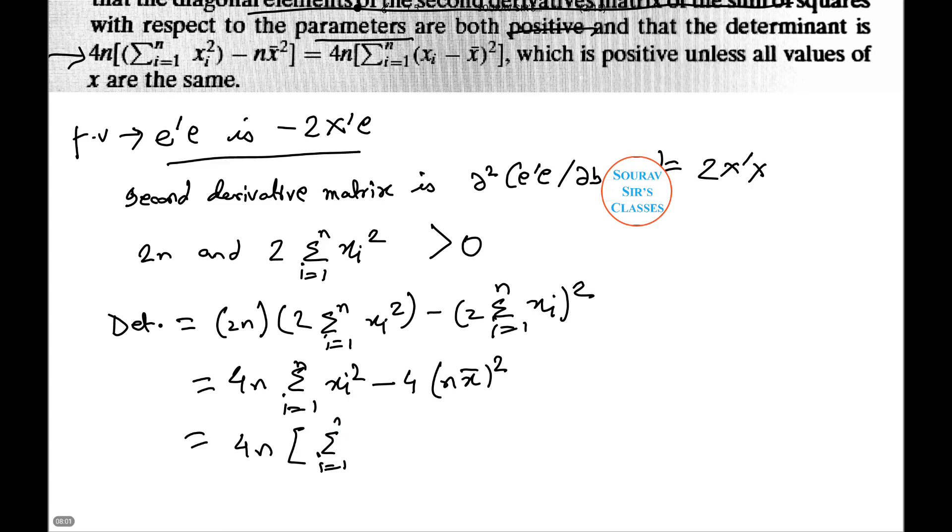Let's simplify it further: 4n times (summation i from 1 to n x_i^2 minus n x bar^2) equals 4n summation i from 1 to n (x_i minus x bar)^2.